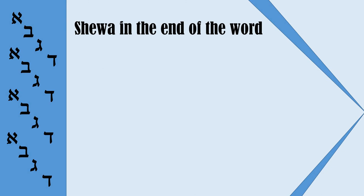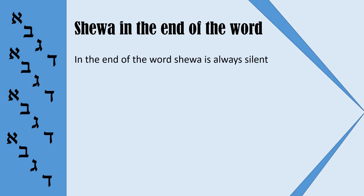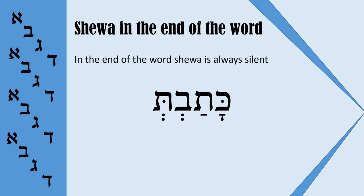Now let us consider a case when Sheva occurs at the end of the word. At the end of the word, Sheva is always silent. For example, the word Kataft — we can see here two Shevas and both of them are silent.